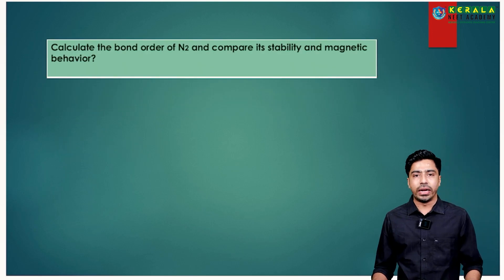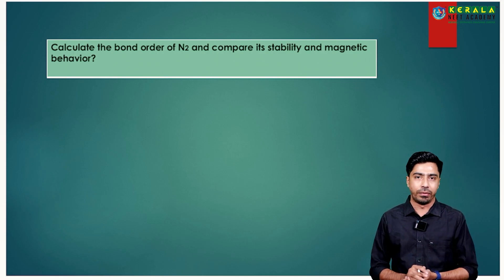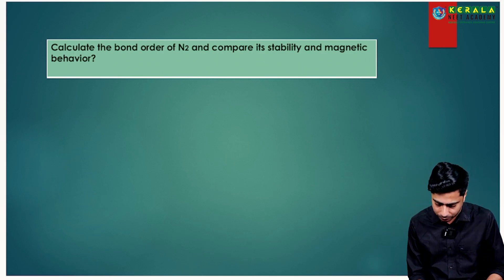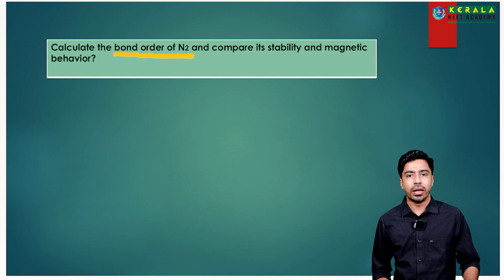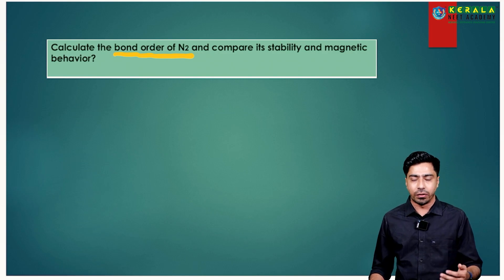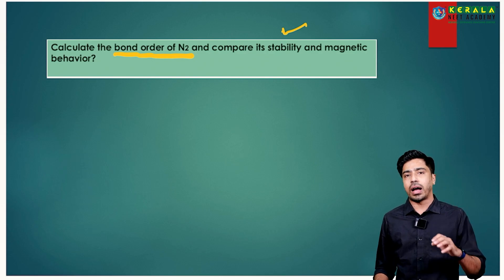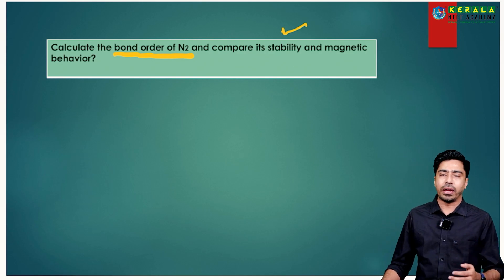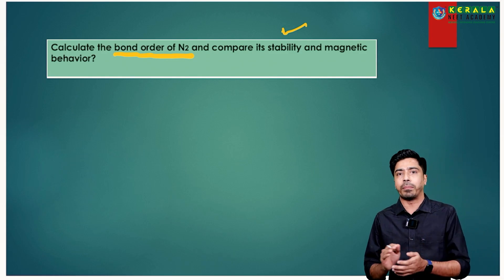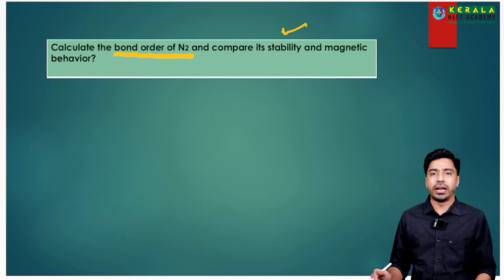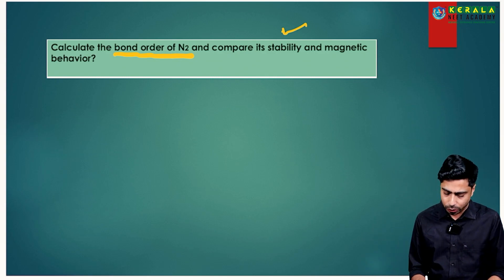Let's calculate the bond order of the N2 molecule and compare its stability and magnetic behavior. Using the bond order formula, if bond order is positive, the molecule is stable. For magnetic behavior, after writing the electronic configuration, if there are unpaired electrons the molecule is paramagnetic; if there are no unpaired electrons, it is diamagnetic.